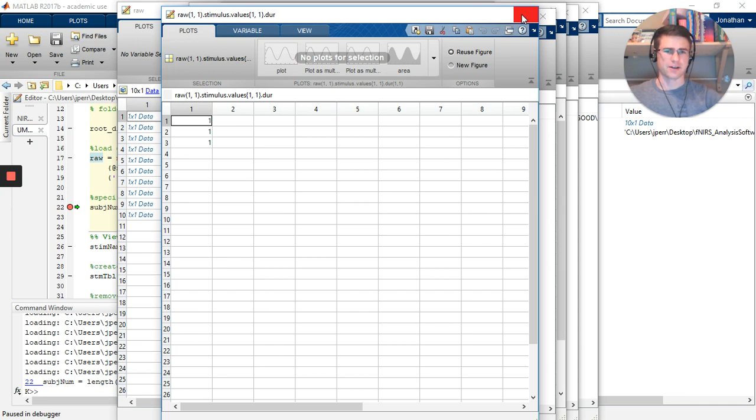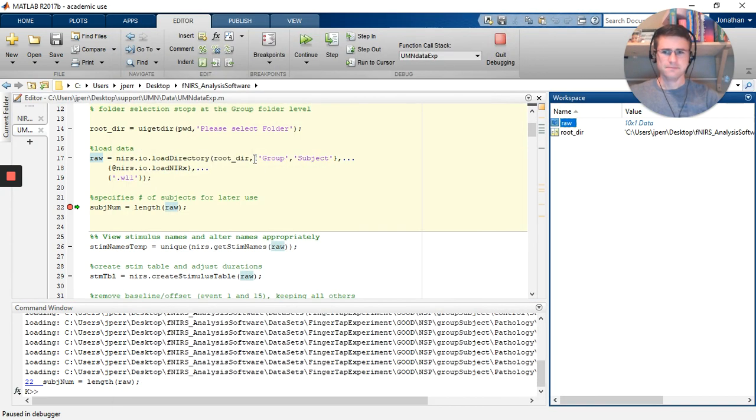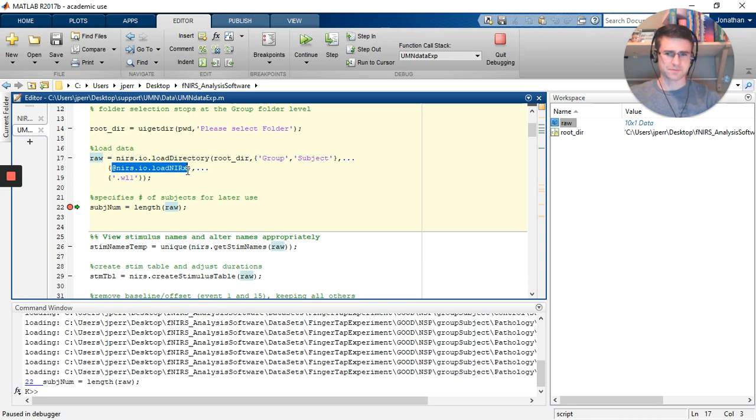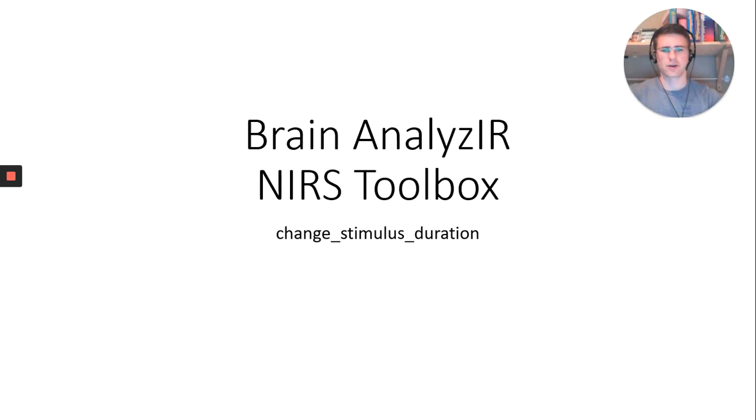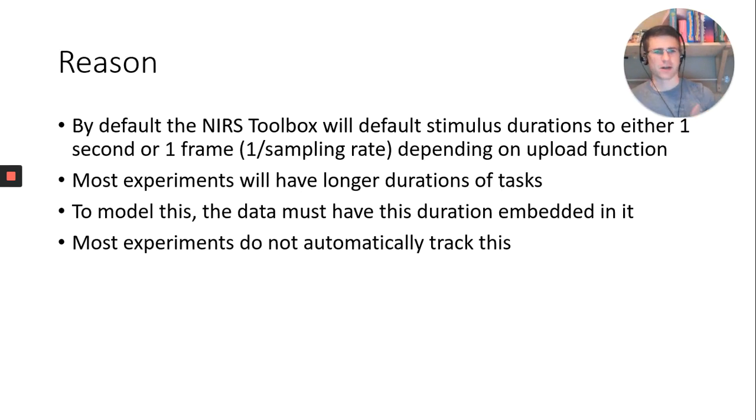The default value when you load it into the NIRS toolbox or Brain Analyzer toolbox is one. I used the loadNerex function. Other functions will have other default values. I think the load.nirs function has the frame length in seconds for the duration. So now you have a quick view of what it looks like. Assuming you have a block average, we're going to move forward with this and go through a default way of how you can do this.